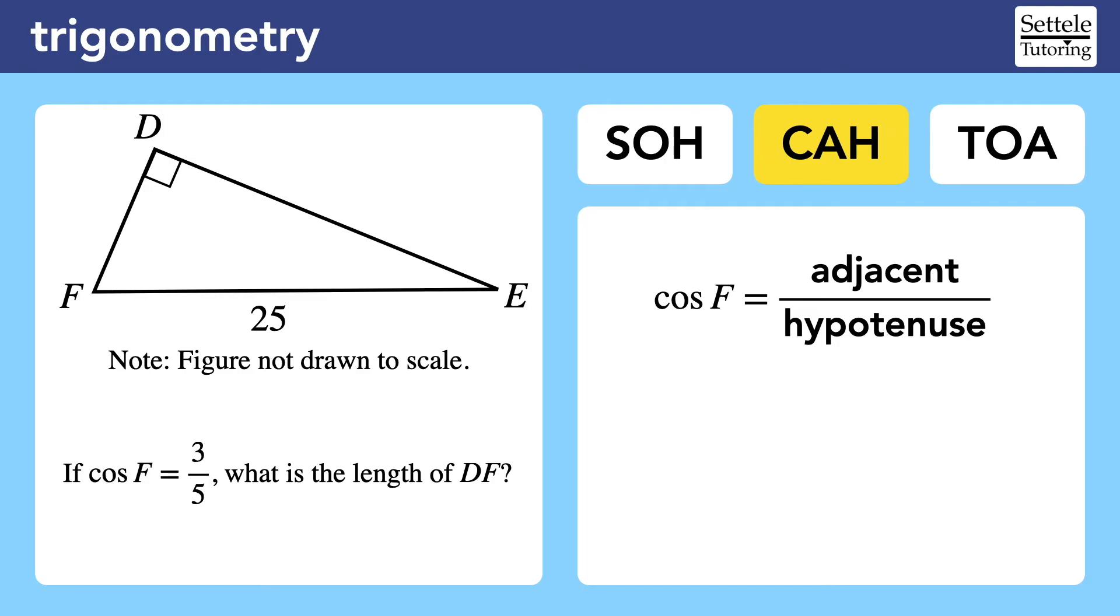If we think about the cosine formula, we might feel like we have a problem. The question tells us that the cosine of F is 3 fifths, which suggests that the hypotenuse is 5. But we can clearly see from the picture that the hypotenuse is actually 25. How is that possible?